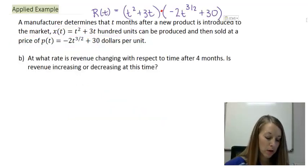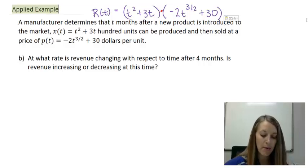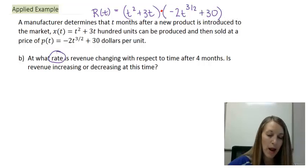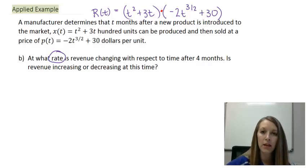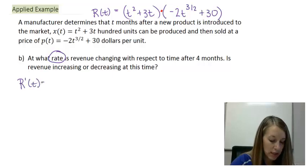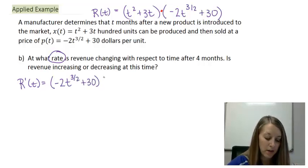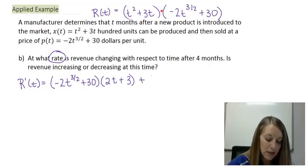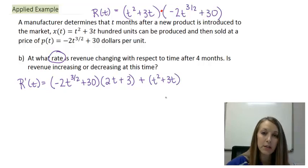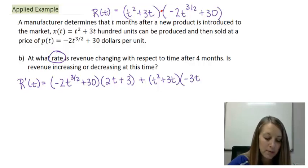So moving on to part B, we want to know at what rate is the revenue changing with respect to time after four months? And is the revenue increasing or decreasing at that time? Since our problem is asking for rate, we're going to be doing the derivative. And since we have a multiplication here or a product, we're going to be applying the product rule. So my derivative equation is the original of the second times the derivative of the first. The derivative of t² gives me 2t. The derivative of 3t gives me 3 plus the original of the first times the derivative of the second. So -2 times 3/2, my 2's cancel out giving me -3t. When I subtract a power, that gives me 1/2. The derivative of 30, it's a constant, gives me 0. So there we go.